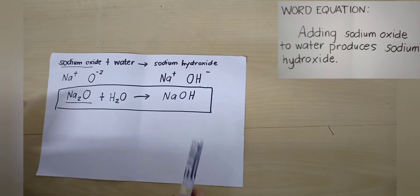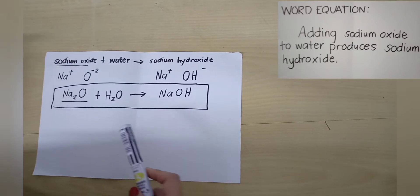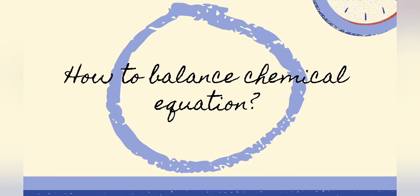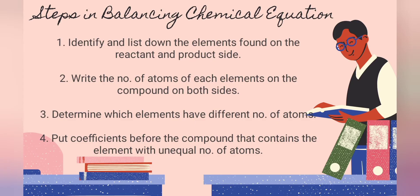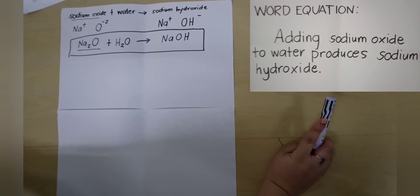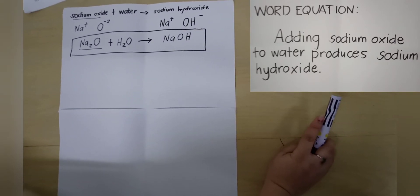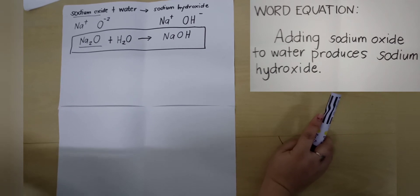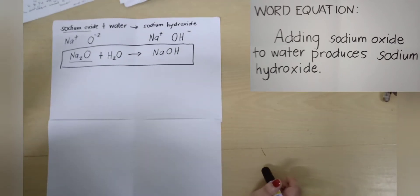This equation is still an unbalanced equation, so we need to balance it to comply with the law of conservation of mass. These are the steps in balancing a chemical equation: First, identify and list down the elements found on the reactant and product side. Second, write the number of atoms of each element on the compound on both sides. Third, determine which elements have different number of atoms. Fourth, put coefficients before the compound that contains the element with an unequal number of atoms. The balancing equation is a trial and error process, so we need to try different coefficients to balance a certain equation.